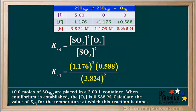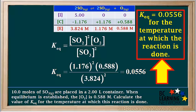We calculate Keq by taking 1.176 squared times 0.588 divided by 3.824 squared, and the answer comes out to 0.0556. Looking at the given data, the lowest number of significant figures is 3, so we express this answer to 3 significant figures, just as written. We can summarize by stating that the Keq value is 0.0556 for the temperature at which the reaction is done.